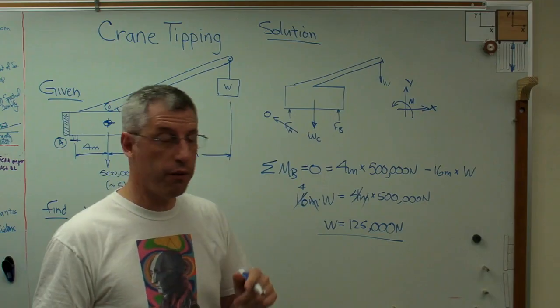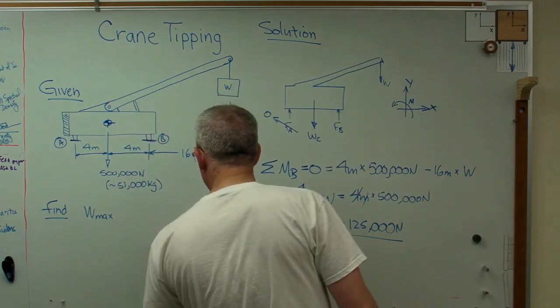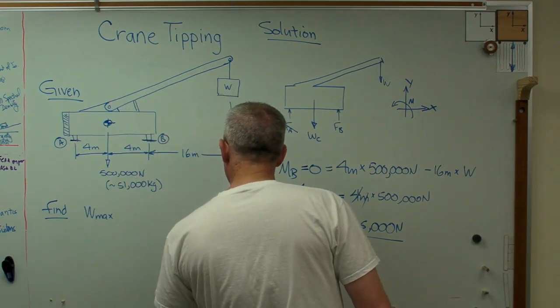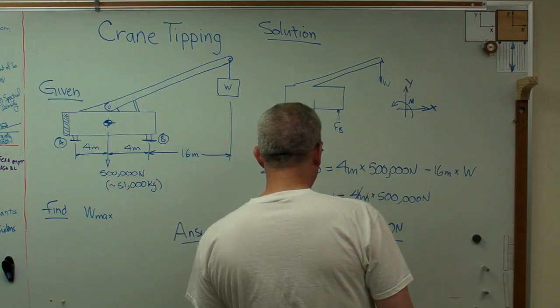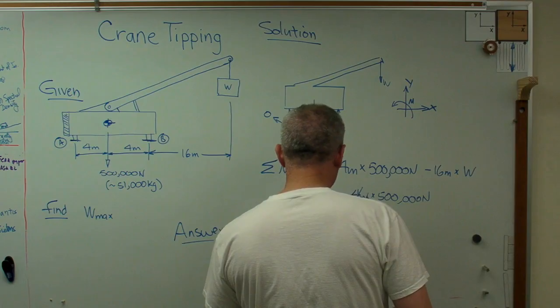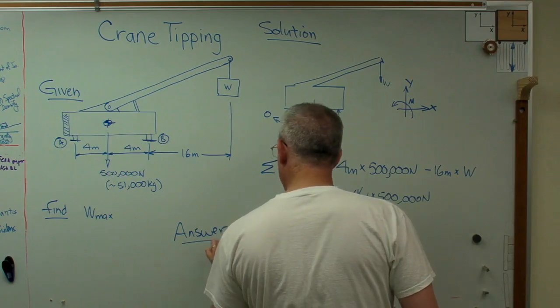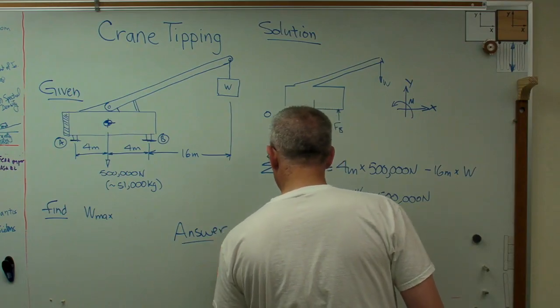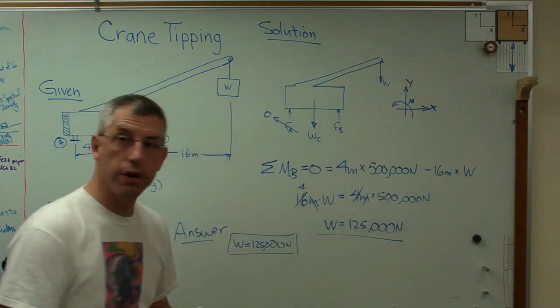Now, in GFSA format, the last thing I'm going to do is write out the word answer. And I'm going to write W equals 125,000. Always put the units on. Draw a box around it. So there you go.